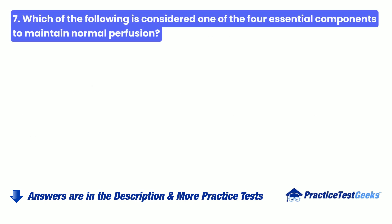Question 7: Which of the following is considered one of the four essential components to maintain normal perfusion?